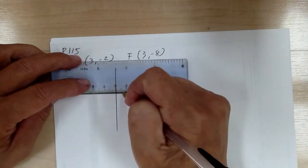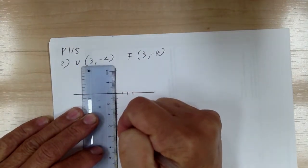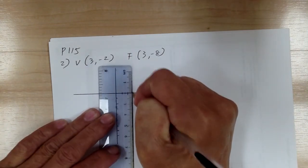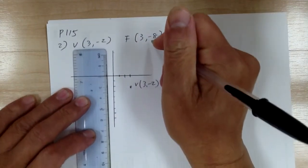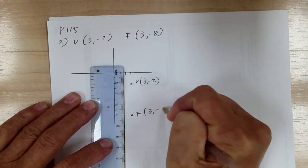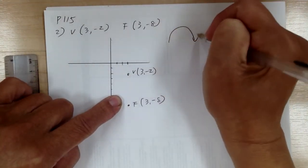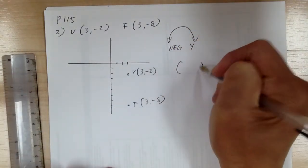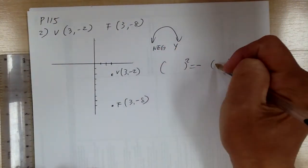So the vertex is at (3, -2) and then you have the focus at (3, -8). From this sketch, you can see that the graph is going this way, and so this is a negative y direction. So get your template ready — this is going to be a negative y direction.